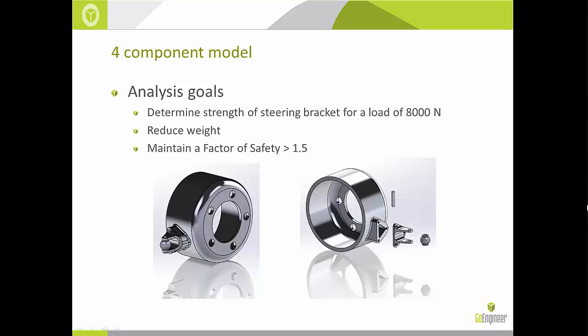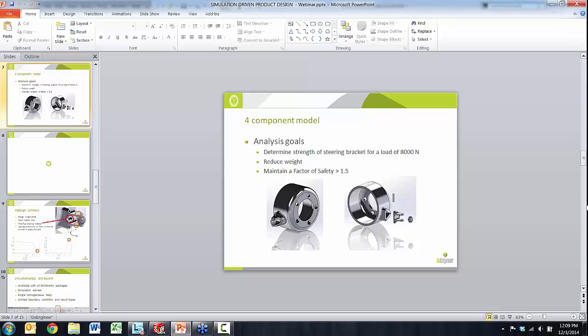For the bracket redesign, we've reduced the steering assembly to a four-component model: the bracket, ball joint, and knuckle casting. Our analysis goals: first, determine the strength of the steering bracket under a maximum load of 8,000 newtons on the ball joint, based on track conditions. Second, reduce the weight of the assembly with the constraint that the minimum factor of safety across all components exceeds 1.5 — meaning the assembly should withstand 1.5 times the maximum load before any component indicates failure.